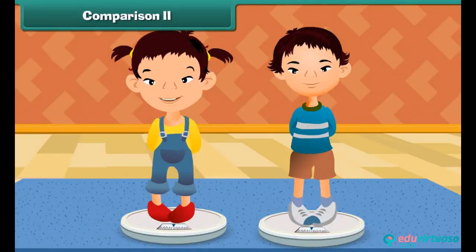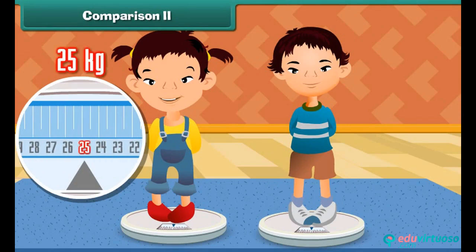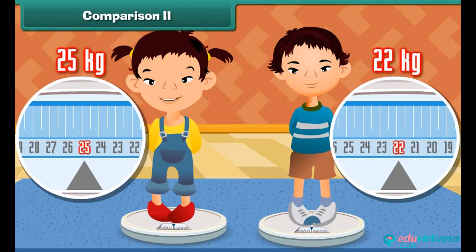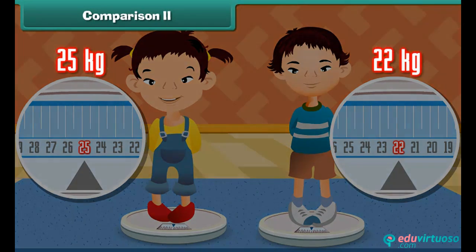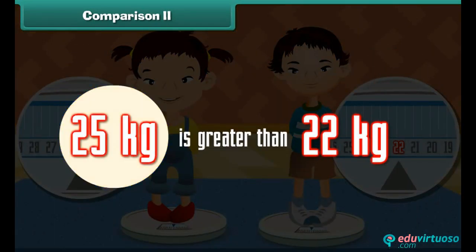Two children measure their weight. The weight of the first child is 25 kilograms and the weight of the second child is 22 kilograms. It is right to say that the weight of the first child is greater than the second one.